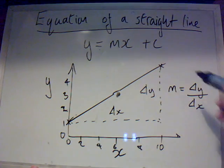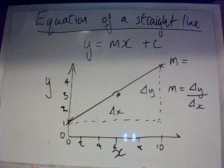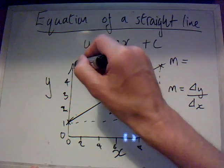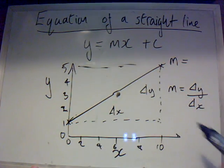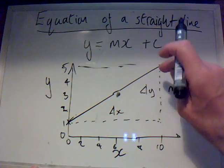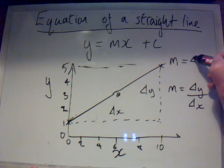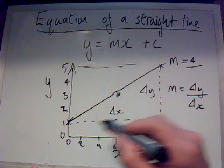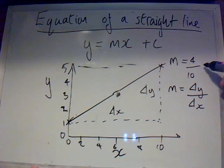So on this particular graph here, I'm going to try and get a value. So m equals change in y. Well, that goes from 1 up to, oh, that there looks about 5. So that would be 5 to 1, that would be 4. 5 minus 1 is 4, divided by the change in x. Well that's 10 minus 0, that's 10. So the gradient is 4 tenths, so the gradient is 0.4.